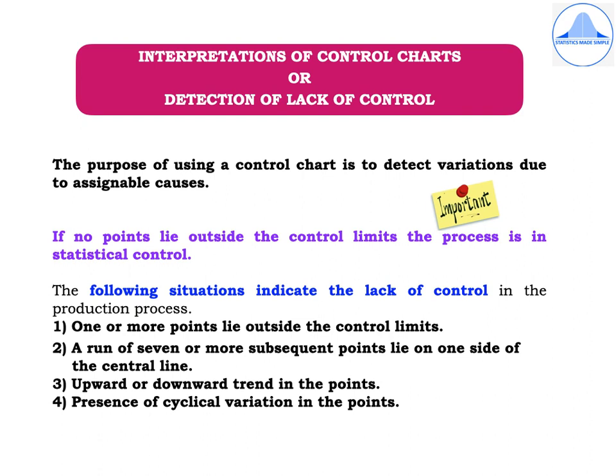Let us now learn how to interpret the control charts, or how to detect lack of control. The purpose of using a control chart is to detect variations due to assignable causes. If no points lie outside the control limits, the process is in statistical control.